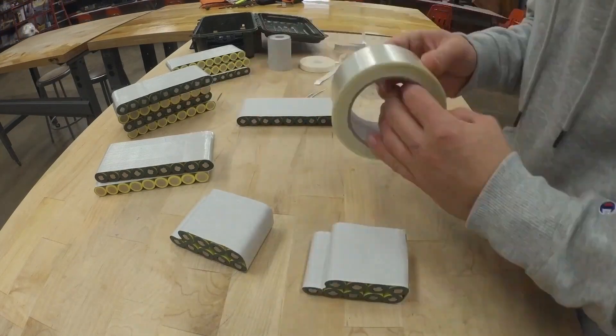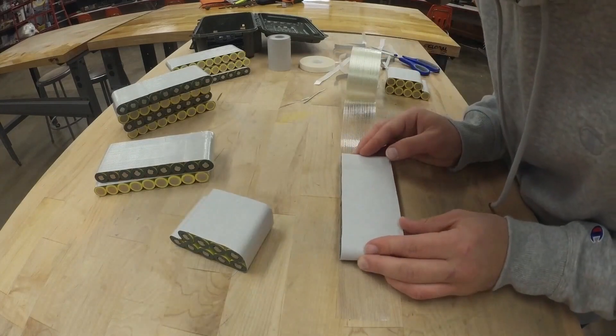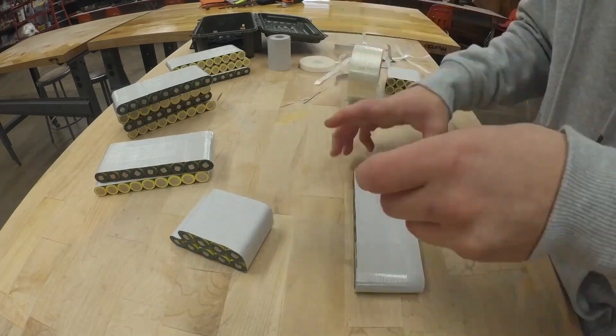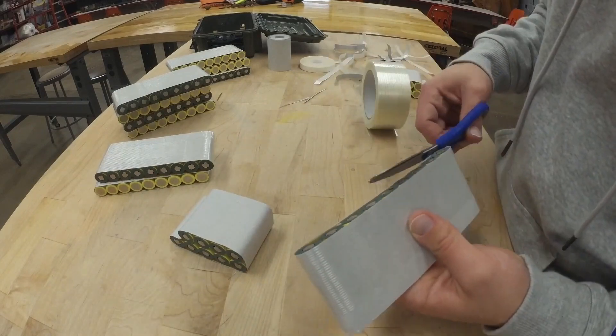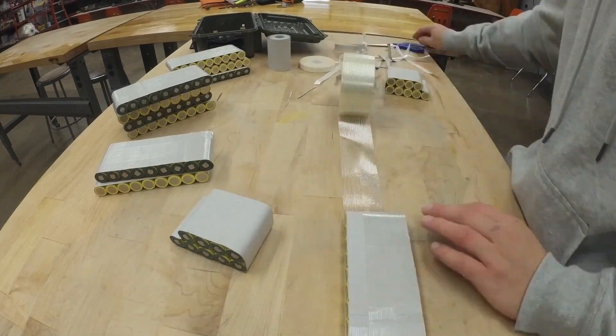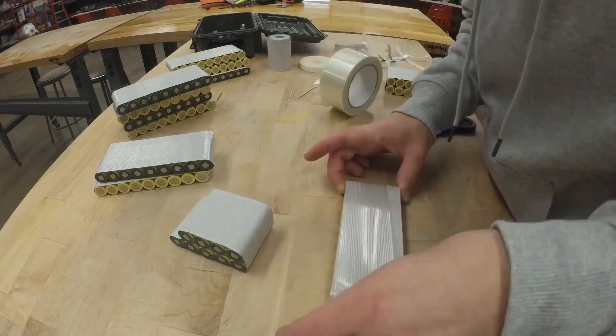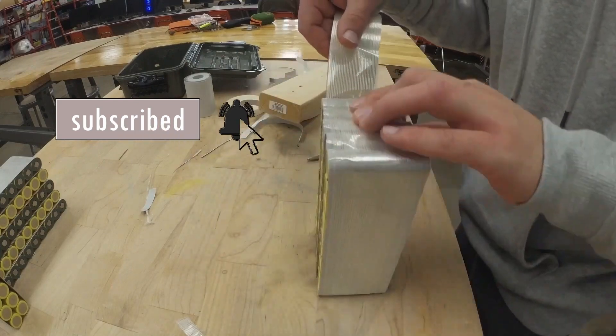After trimming the packs, I used the fiberglass tape to hold it all together. You can see I did two groups of 5S packs in an alternating pattern to make the welding more efficient.